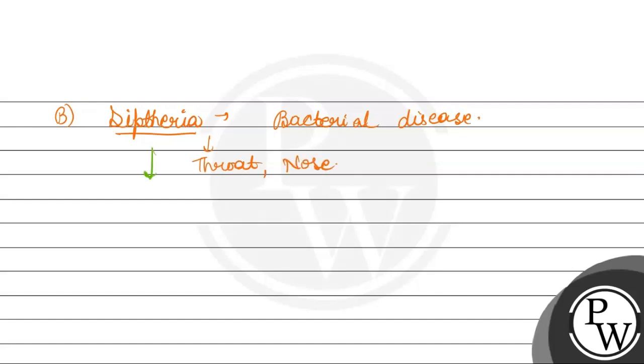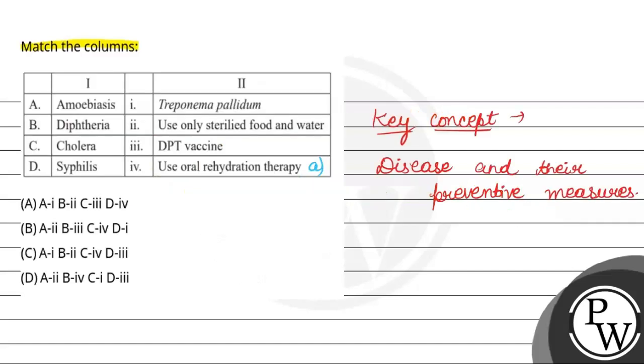This is against DPT vaccine. That means diphtheria, pertussis, and tetanus vaccine. So B Diphtheria, third DPT vaccine, option third.